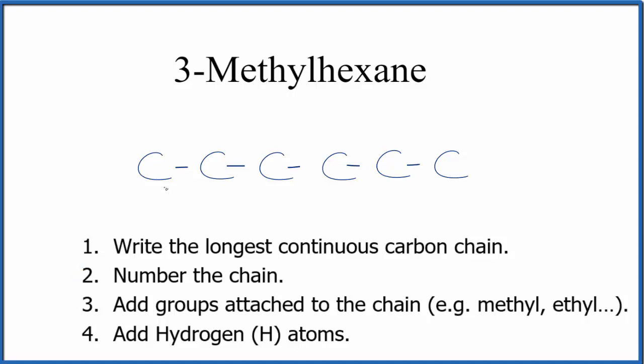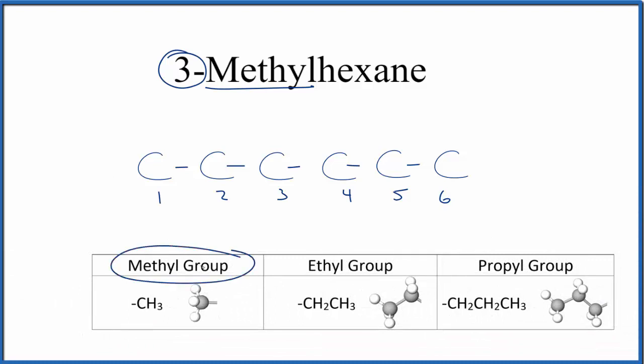Next, we number the chain. We'll start from the left and go to the right, so on the third carbon we'll have a methyl group. The methyl group - you'll see this quite often in organic chemistry - that's CH3. So we're just going to put another carbon here on the third carbon in our parent chain.